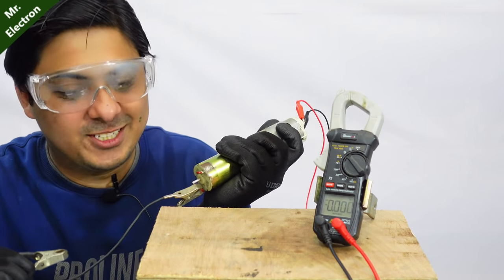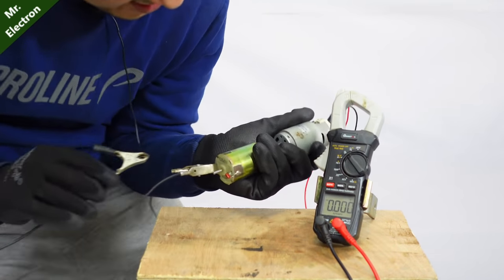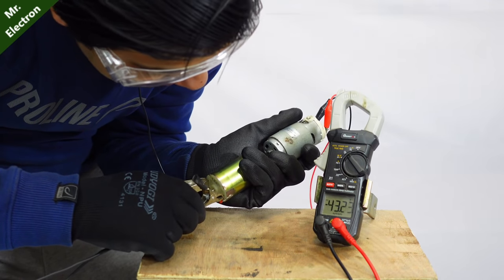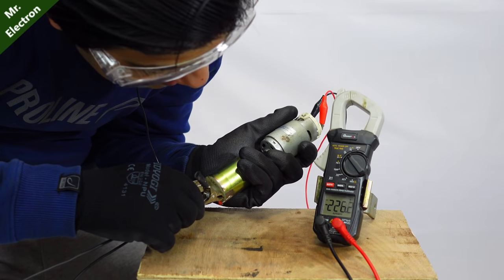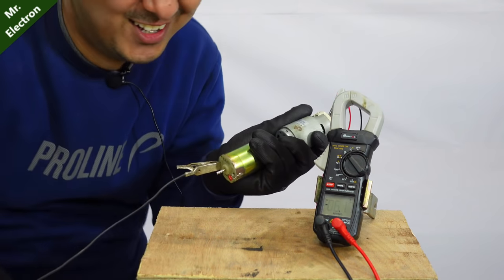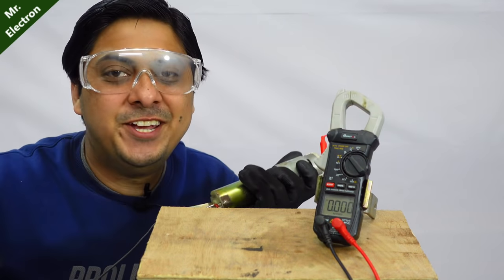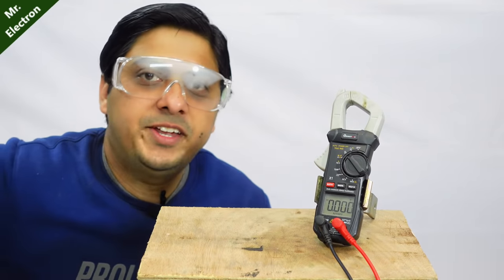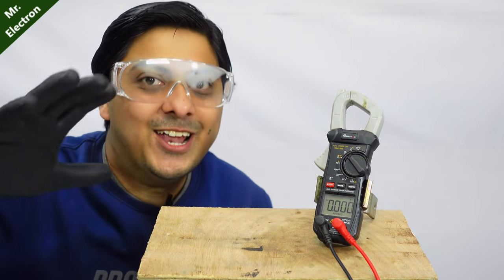How much voltage did we achieve? Oh, it is very scary. 226 volts DC, very very good. We have seen the voltage, let's move on to the final load testing.